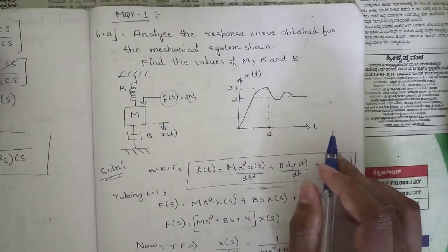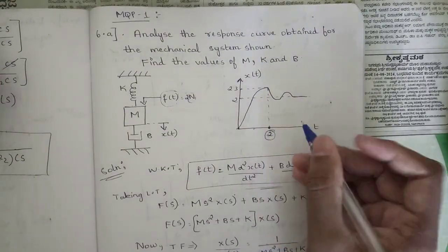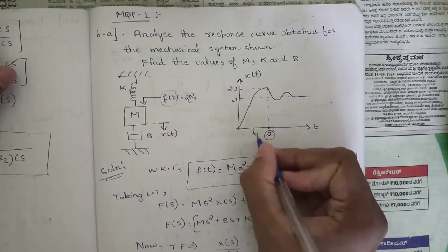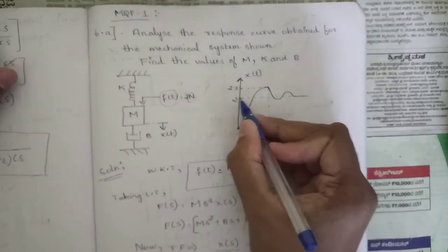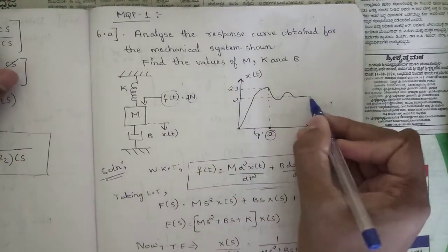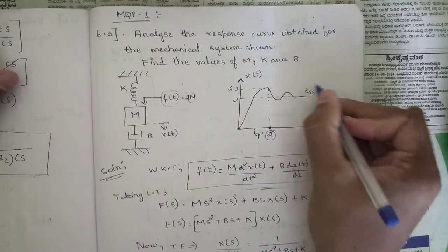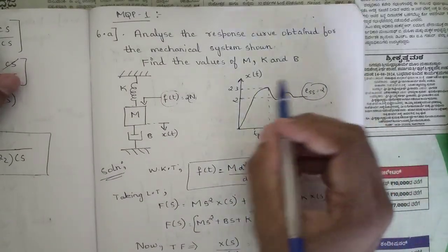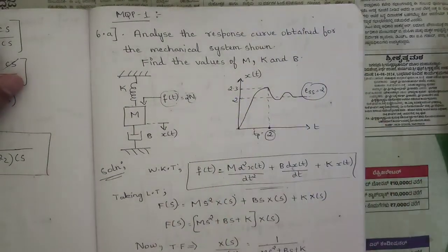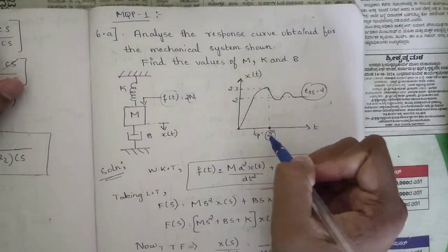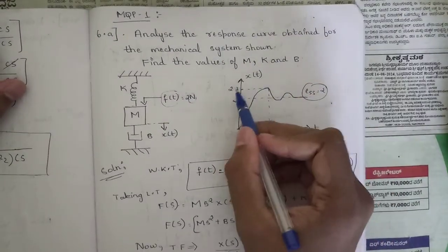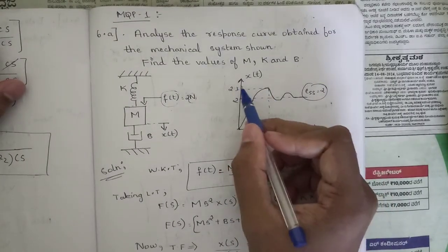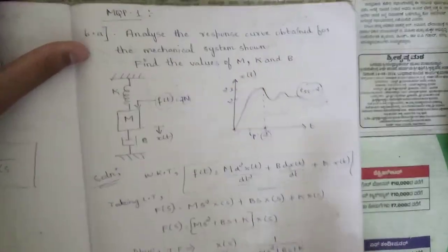From the given plot, the peak time tp is equal to 2 seconds. The settling time, or steady-state value, is reaching steady state at 2 seconds, so ess is equal to 2. Also, the peak displacement value of the output response c(t) is given as 2.3.